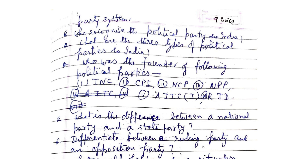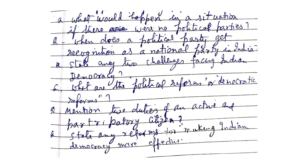Differentiate between the ruling party and an opposition party. What would happen if there were no political parties? When does a political party get recognition as a national party in India? State any two challenges facing Indian democracy. What are political reforms or democratic reforms? Mention two duties of an active party citizen.